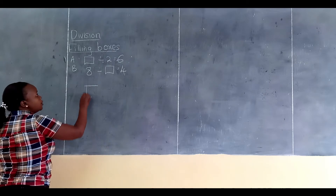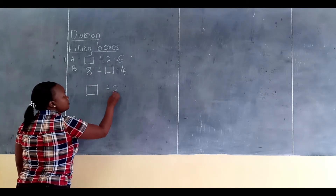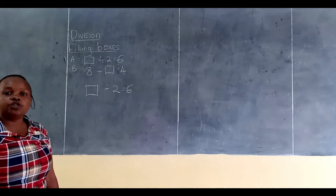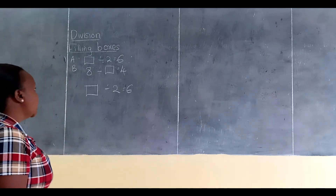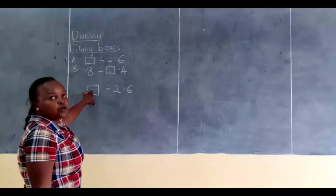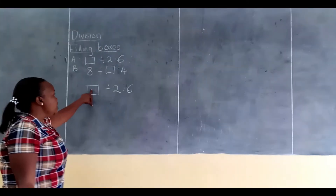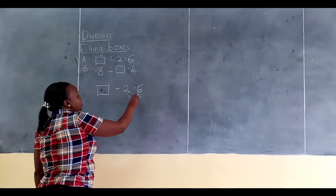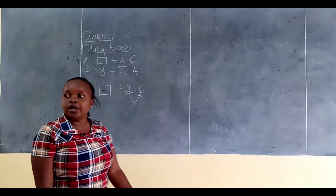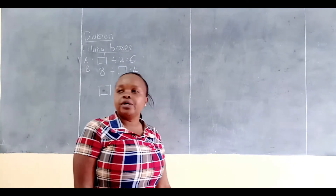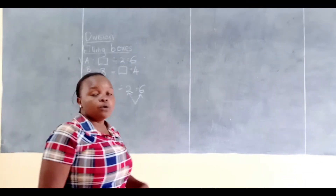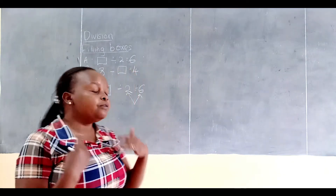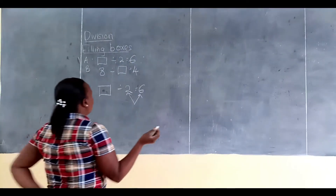When you are given a box followed by a number, we normally do multiplication to get the missing number. So we are looking for the number in the box. When you are looking for the missing number, you are supposed to multiply these two numbers so that you can get the answer. I believe all of you can remember how we handled multiplication in the previous lesson. So let's go.